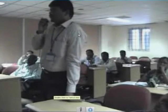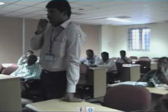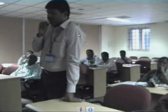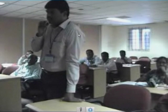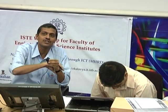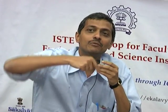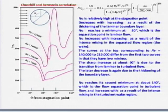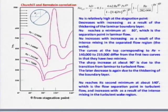Another question: why does h decrease in the entry region? The answer is the same principle. At the entry there is no boundary layer thickness, so heat transfer coefficient is maximum. As we move downstream, boundary layer thickness increases, increasing resistance to heat transfer, so h continuously decreases. When fully developed, boundary layer thickness becomes constant, and h also becomes constant.